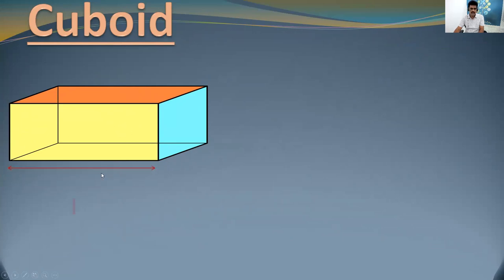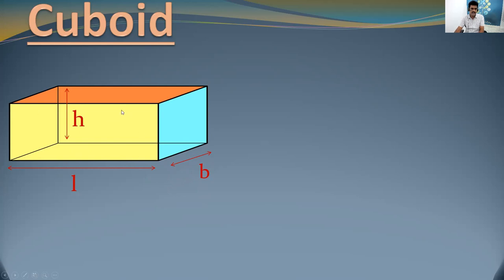This is the length of the cuboid, marked as L. This is the breadth of the cuboid. And one more is the height of the cuboid. Children, if you imagine a room — for example, your classroom — you can understand very easily. This is like a room. This is the floor of your classroom, this is the side wall, this is another wall, this is the top, and this is the bottom. Please imagine like that, then you will understand very easily.